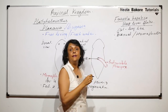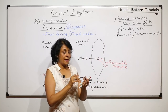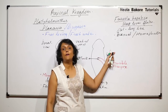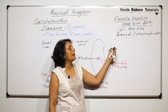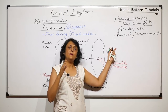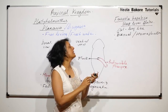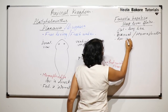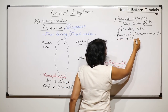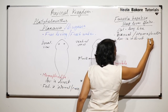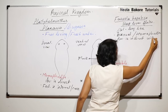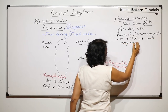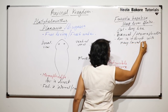In them the development is indirect, and especially in the case of Fasciola hepatica there are many larval stages seen. So development is indirect with many larval stages.